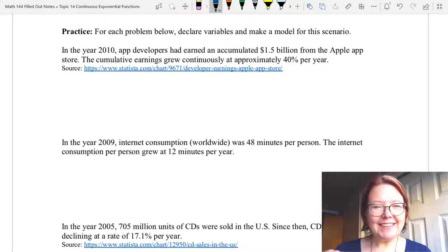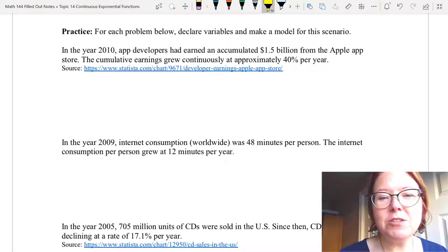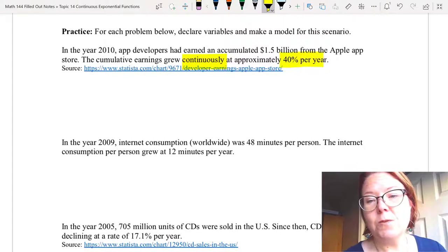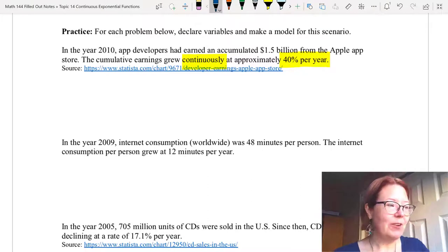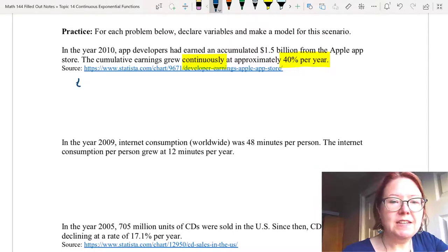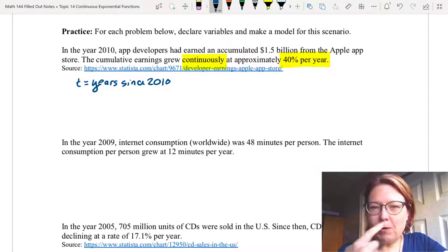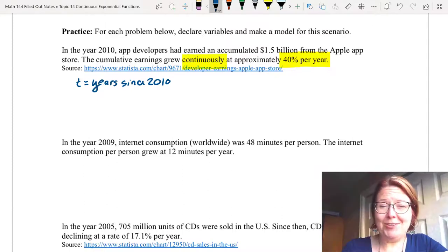Let's note important words in the problem and declare variables. In this case, we do have that the growth is continuous and we have the rate. It's 40% per year. Let's declare our variables. We're going to let T equal the years since 2010, and we should really all have the same variable declared because the initial value, the A value is $1.5 billion, and that happens in the year 2010.